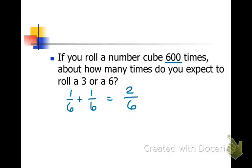We can set up a proportion and say two out of six is equal to what out of 600? You could change it to a decimal, but when it's one third, it's going to be a repeating decimal, so that might be kind of hard to do.